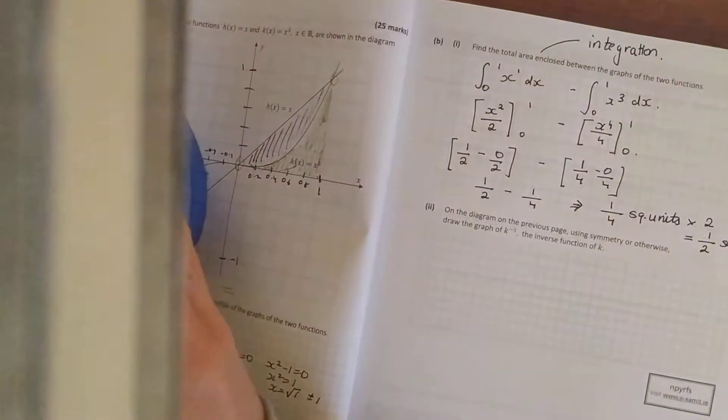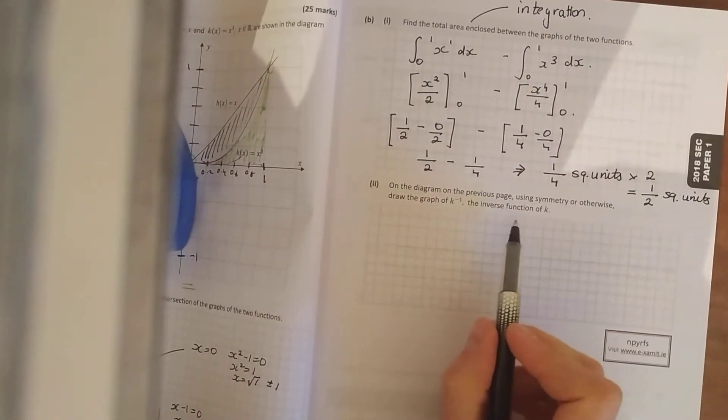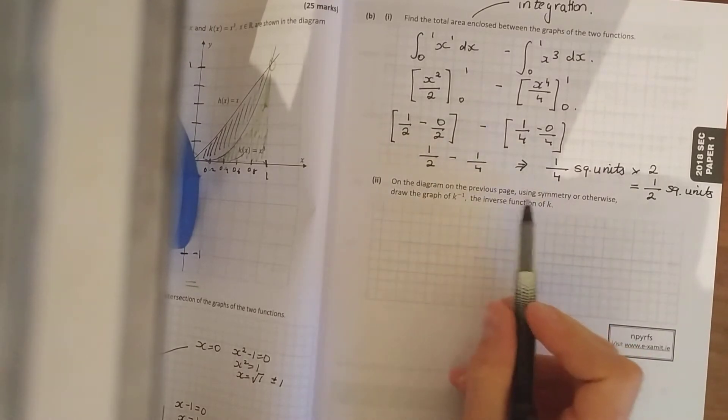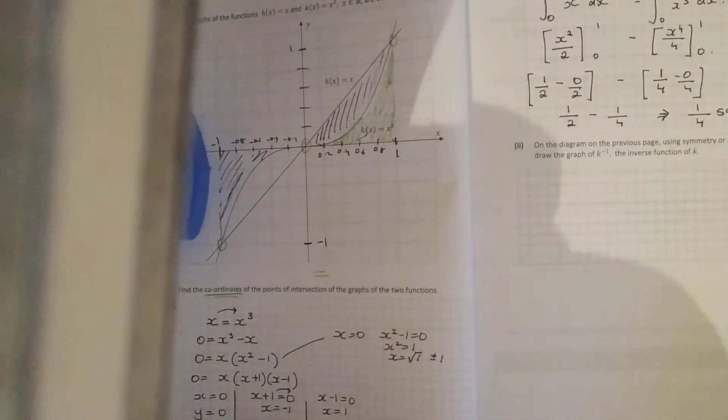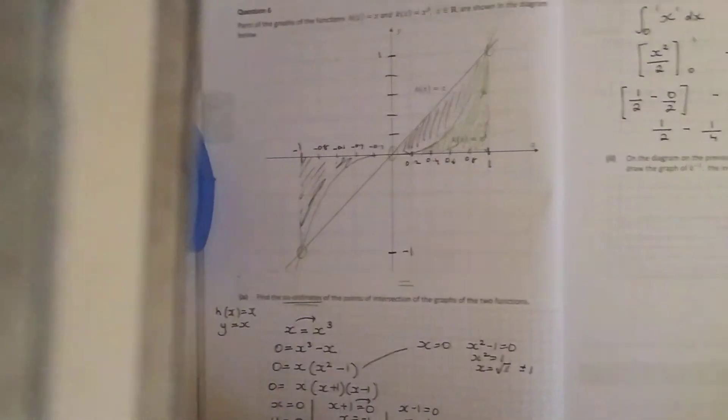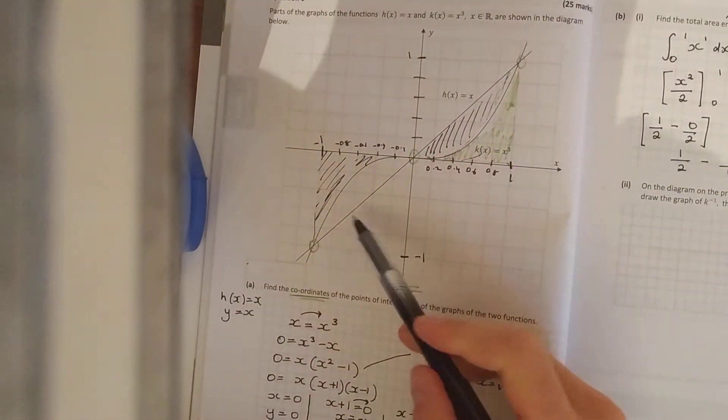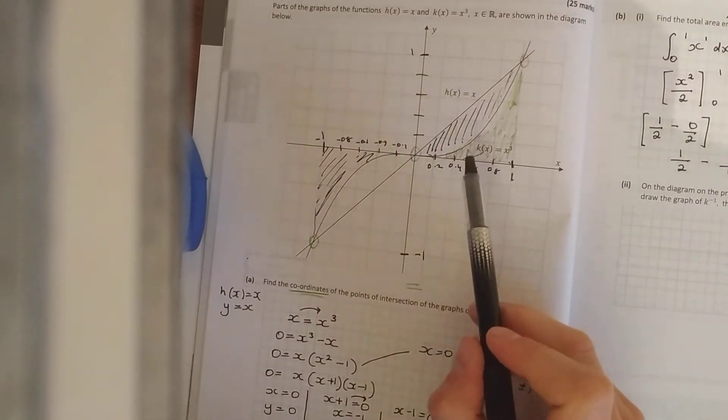And the last bit is asking you, on the diagram on the previous page, using symmetry or otherwise - now symmetry is easier but I'll do the otherwise as well - draw the graph of the inverse function of k. So the inverse is just the opposite of k. So that's actually symmetrical through your line y = x. And I've made a hames of this now by shading in these bits, but sure.